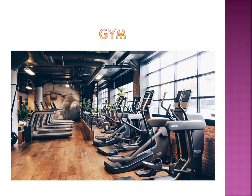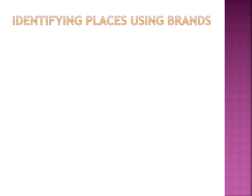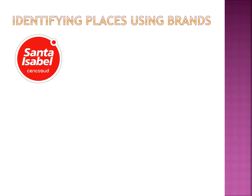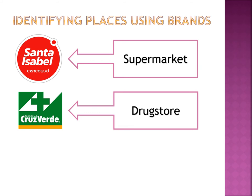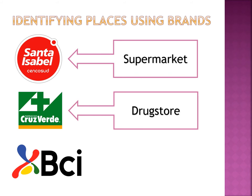And now we are going to identify these places using brands that are used in our country. For example, we have the brand Sant Isabel. Do you know what this place is? It's a supermarket. Cruz Verde. Do you know what this place is? It's a drugstore. And finally, BCI. Do you know what this place is? It's a bank.